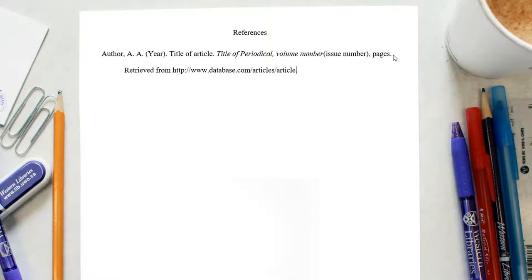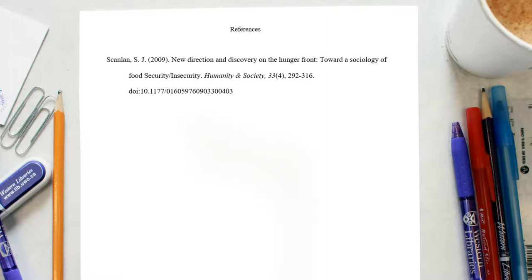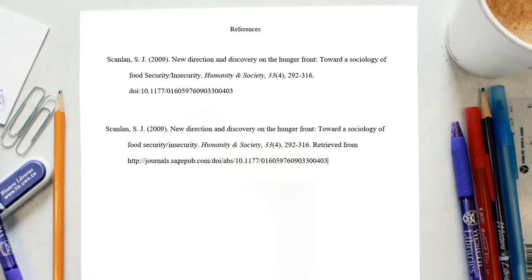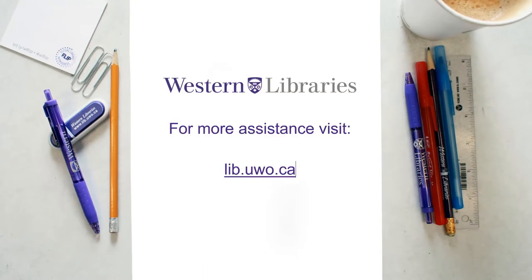Now your reference section entry is complete. Using a real article as an example, the finished reference would look like this. Or, if you couldn't find the DOI, like this. This concludes the journal citation video. Please check out our other video tutorials if you need more help.